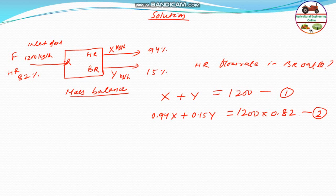Quickly, let's do this. Let's do this equation 1 and multiply 0.94 or equation 2 here 0.94X plus 0.15Y will be equal to 1200 into 0.82.